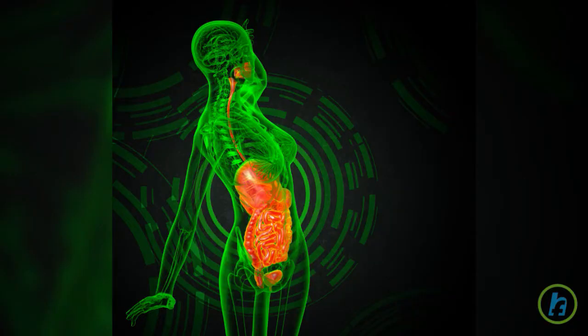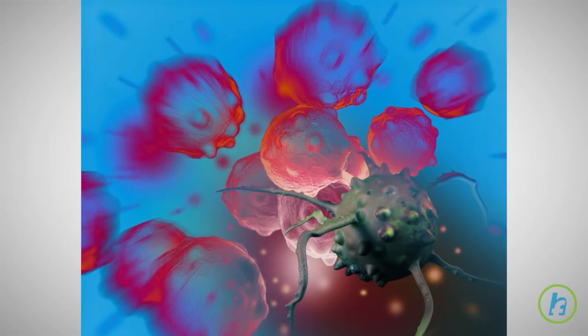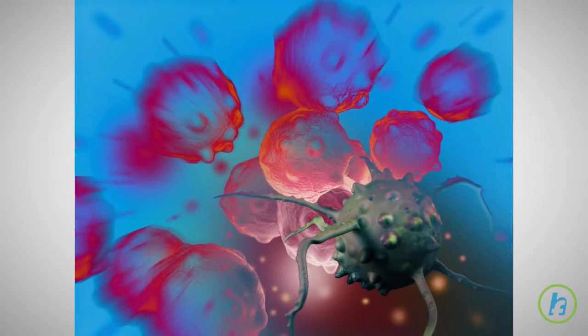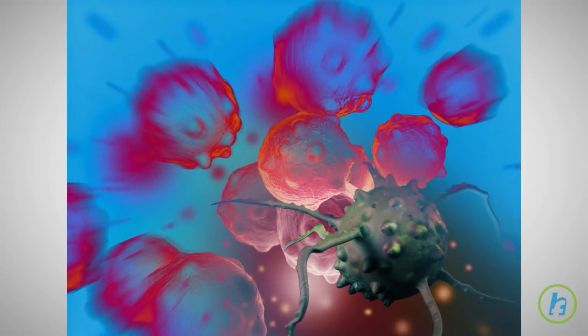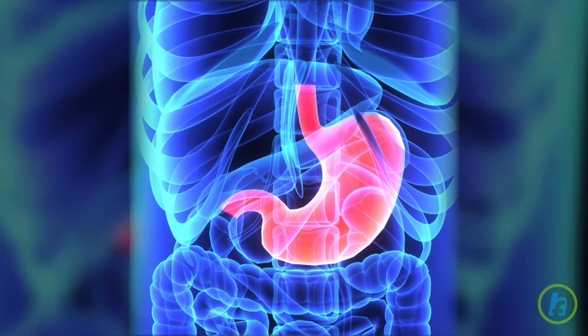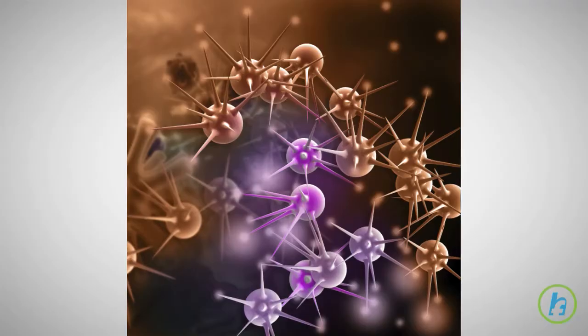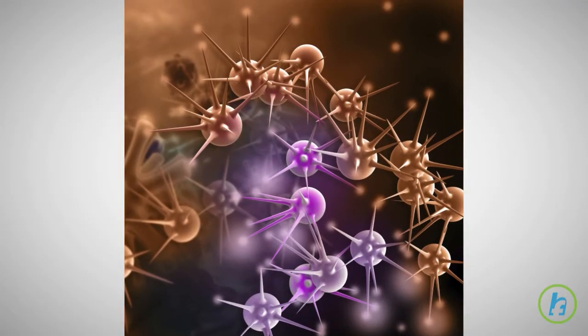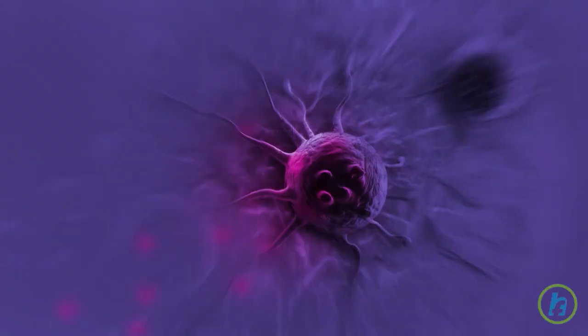Stage 2: cancer has spread further through layers of the stomach, and more distant lymph nodes may be involved. Stage 3: cancer has spread through all layers of the stomach or is affecting more distant lymph nodes. Stage 4: cancer has spread to nearby tissues and organs or has spread to more distant areas of the body through the lymphatic system.